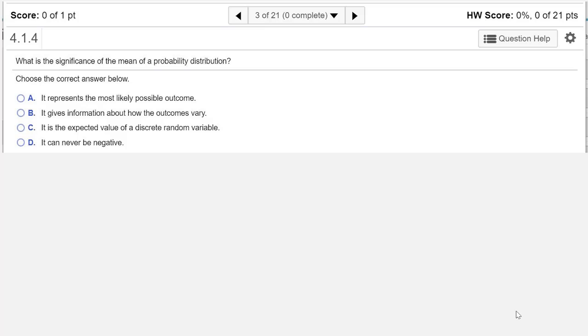So our possible answers are A: It represents the most likely possible outcome. B: It gives information about how the outcomes vary. C: It is the expected value of a discrete random variable. Or D: It can never be negative.